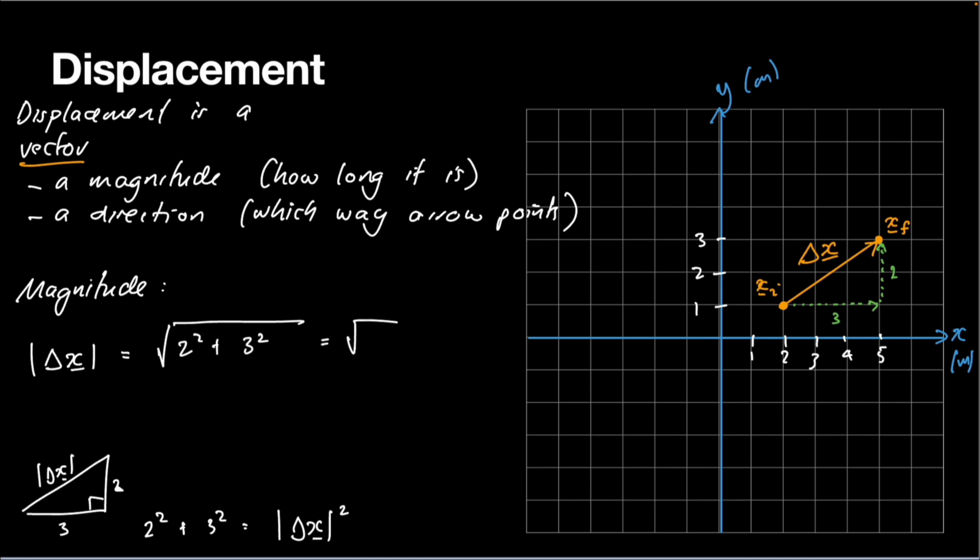which would be the square root of 4 plus 9, which is 13 meters. Three point something meters, which kind of makes sense. A bit longer than 3, a bit less than 4. And like I said, we'll talk more precisely about the angles a bit later on.